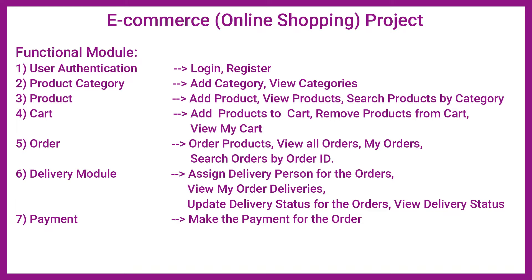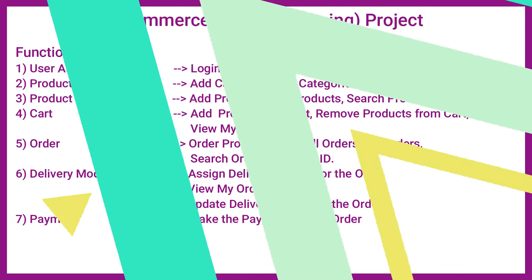We can also search products by category. The fourth module is the cart module, where the customer can add products to the cart, remove products, view the cart, and see the total cart amount. The next module is the order module, where the customer can order products and view his orders. The delivery module allows admin to assign a delivery person for orders, and the delivery person can view and update delivery status. The last module is the payment module, where the customer pays for successfully ordering a product.